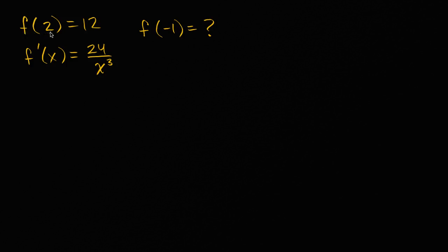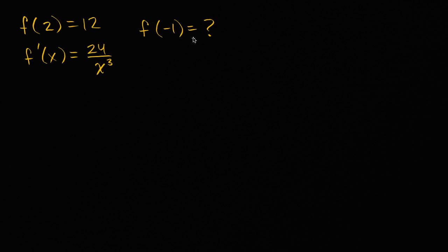We're told that f of two is equal to 12, and f prime of x is equal to 24 over x to the third. What we want to figure out is what is f of negative one. They give us the derivative in terms of x, so maybe we could take the anti-derivative of the derivative to find our original function. Let's do that.